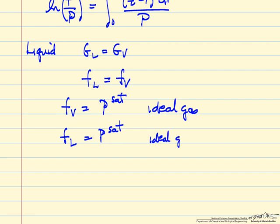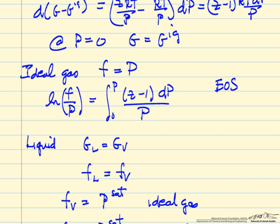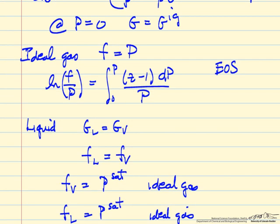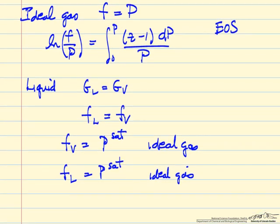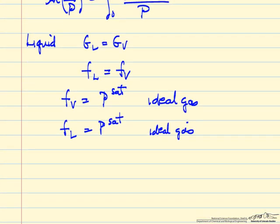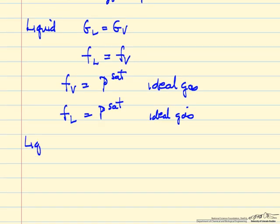So now we have fugacity in a vapor for an ideal gas. We have a way of calculating fugacity for a gas that's not ideal, if we have more information about how not ideal it is. And then for a liquid at saturation conditions, the fugacity is the pressure. For a liquid at higher pressure, so liquid where the pressure is greater than the saturation pressure, the first thing to realize is not much changes.